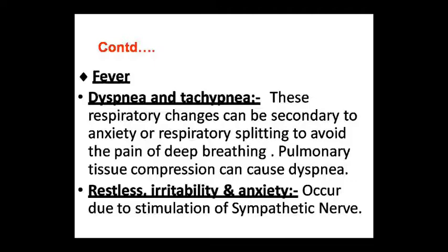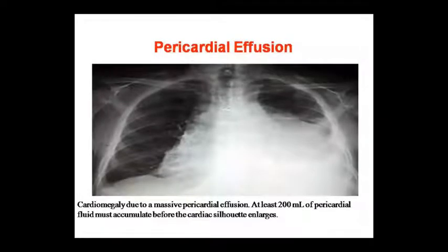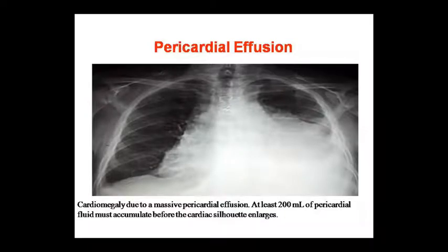In addition, the person may experience dyspnea and tachypnea — respiratory changes which can be caused by anxiety or respiratory splinting due to pain. Heart anxiety leads to sympathetic nerve stimulation. Pericardial effusion and cardiomegaly can develop. Massive pericardial effusion of over 200 ml of pericardial fluid can cause cardiac enlargement, which is visible on imaging.